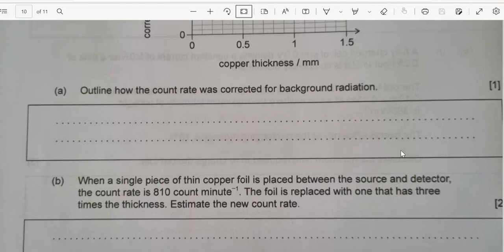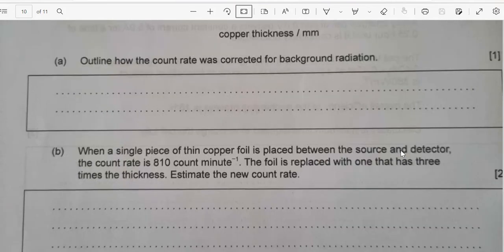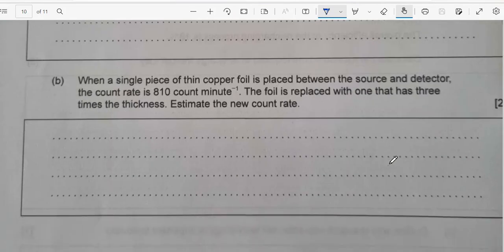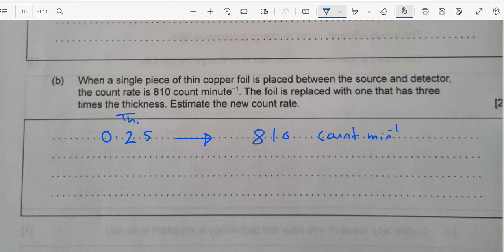Now B. This is topic seven, guys. Nuclear and atomic physics. Part B: When a single piece of thin copper foil is placed between the source and detector, the count rate is 810 count per minute. When we have the thickness of 0.25, the count rate is 810 count per minute. This is the thickness.